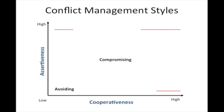In the middle of the graph we have the compromising style. This may be necessary when there is little hope for mutual gain, when both parties have equal power, and when both parties need to settle their differences quickly. This is the so-called 'good enough' solution, which sometimes overlooks even better solutions. Think of buying a car at a negotiated price or negotiating a salary — we give up some of our desire to maintain a relationship and some of our desire to win at all costs, resulting in a slightly sub-optimal solution for both parties.